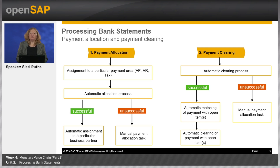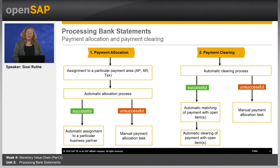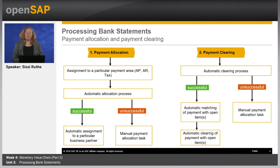Customer payments are also mainly automatically cleared by payment clearing. Externally initiated payments which cannot be cleared immediately can at least be allocated to the correct payment area or subledger. During payment processing, the system applies payment allocation and payment clearing as two distinct but related steps. For incoming and outgoing payments, both steps are required.